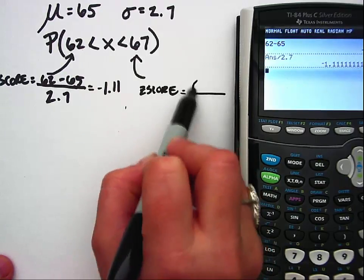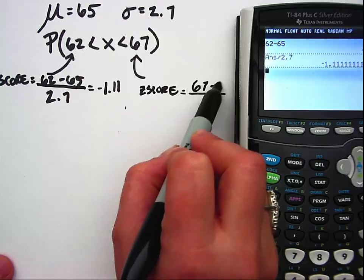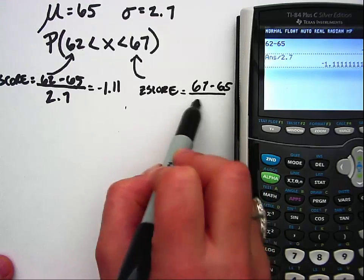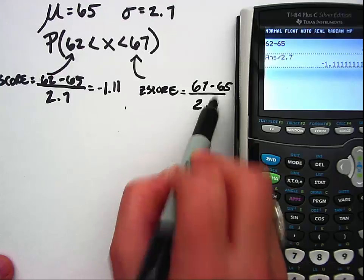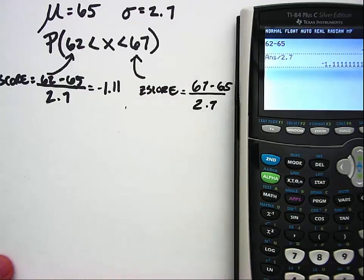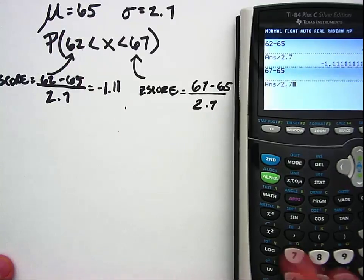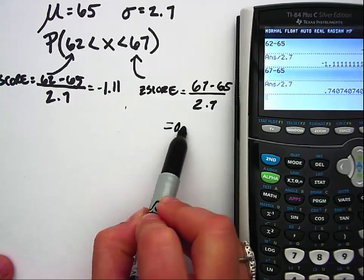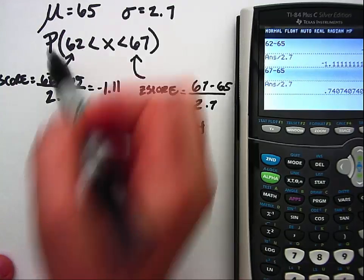So then we'll also calculate a z-score for 67, so that will be our x minus 65 which is mu, and we'll divide that by 2.7 which is sigma. So we have 67 minus 65 and then dividing that by 2.7 gives us a z-score of 0.74.